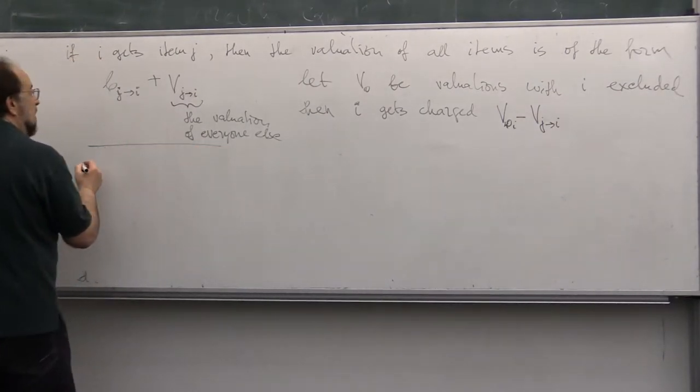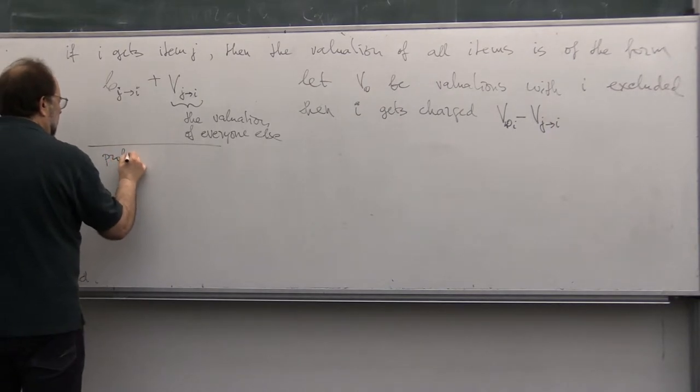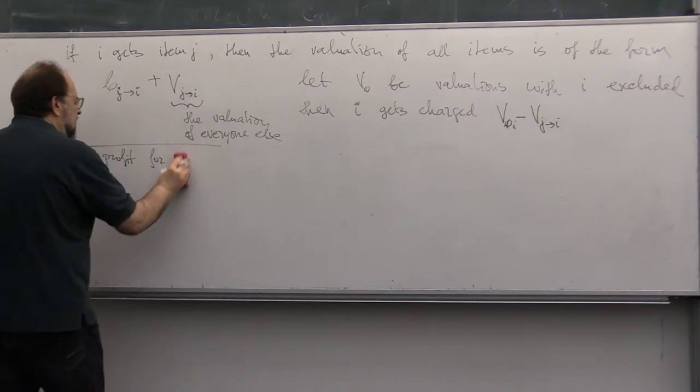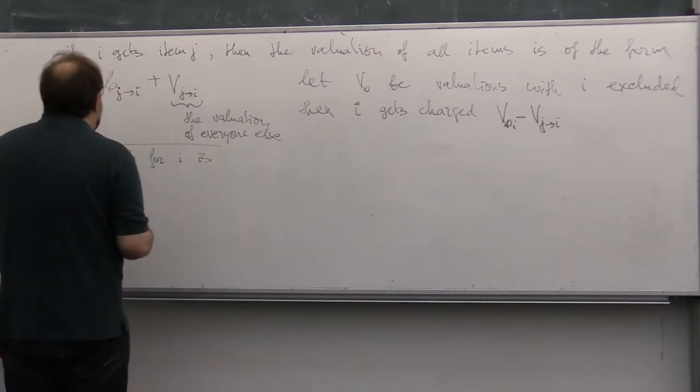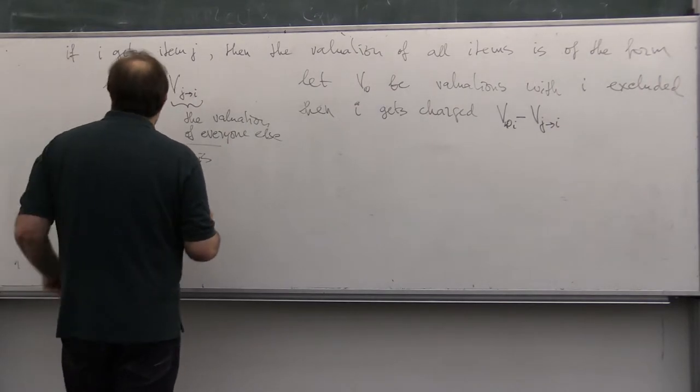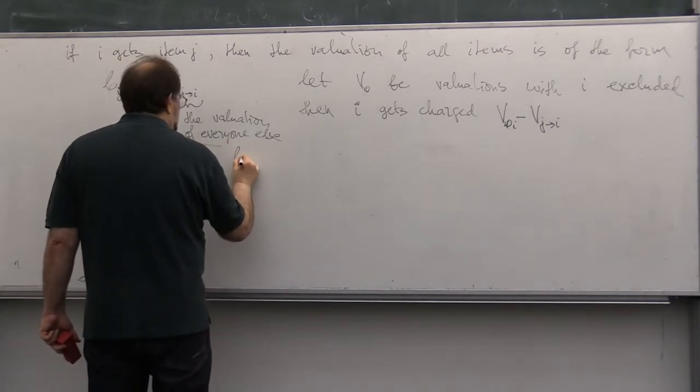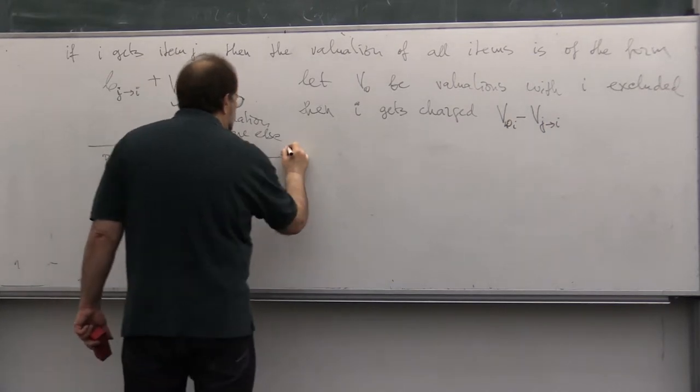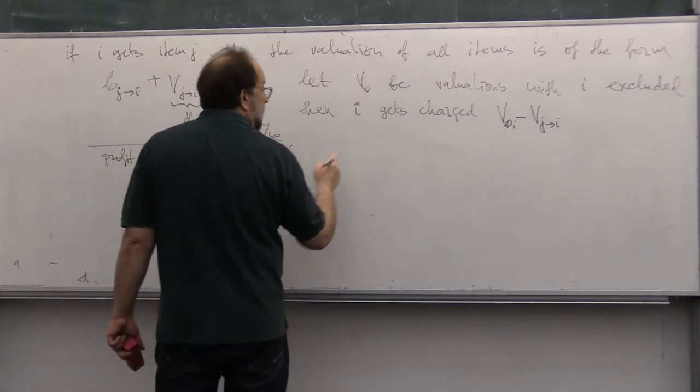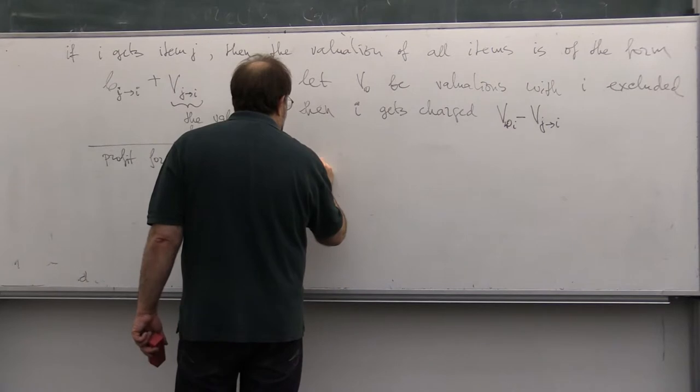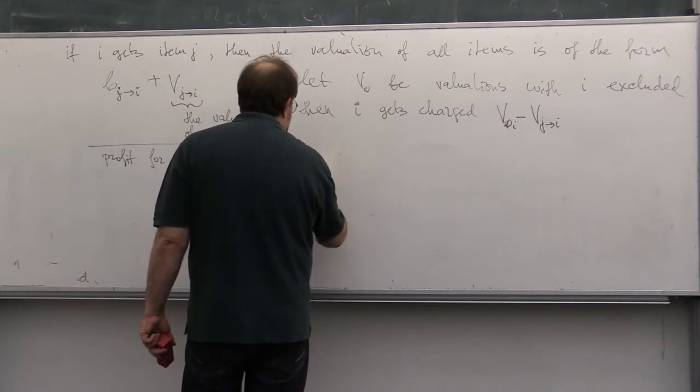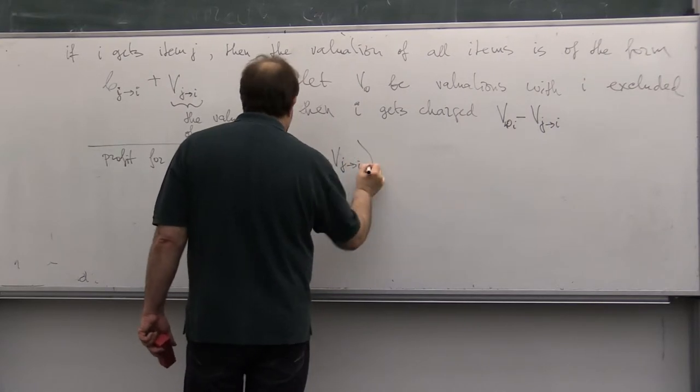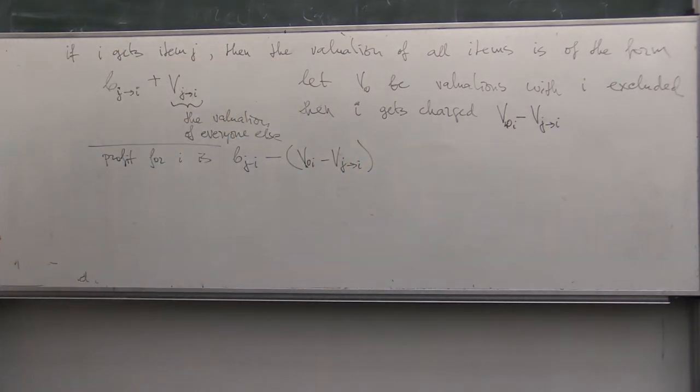Now, so profit for I is the value that he gets, VJ goes to I, minus the price that he pays, which is the damage, which is minus V0 no I, minus VJ goes to I. So this is the profit for I.